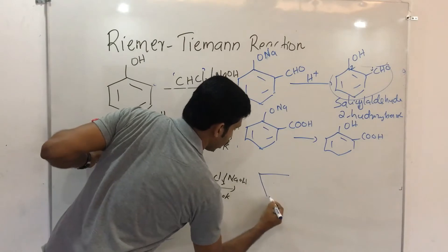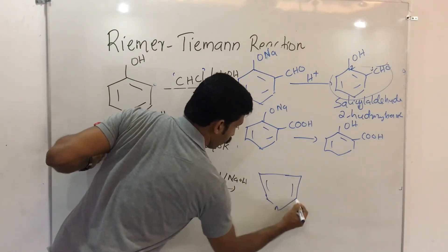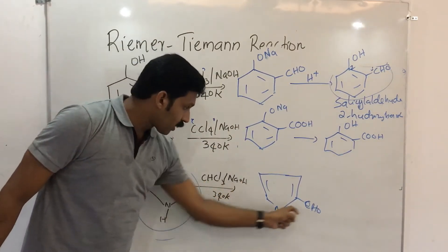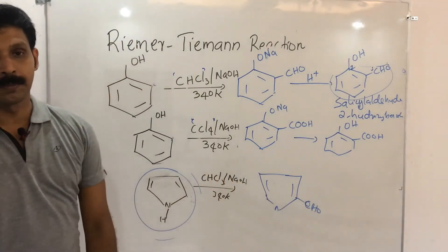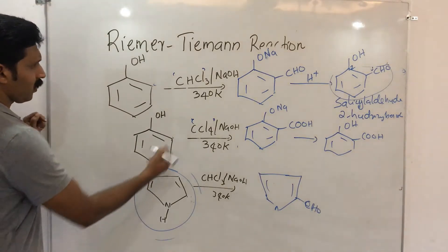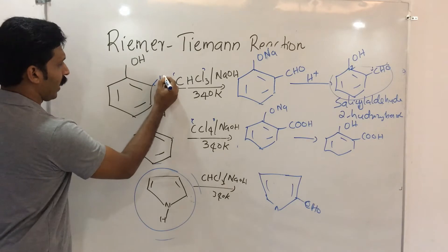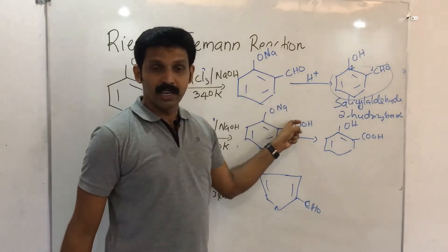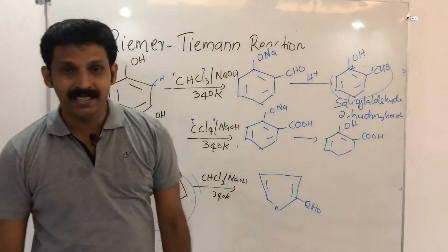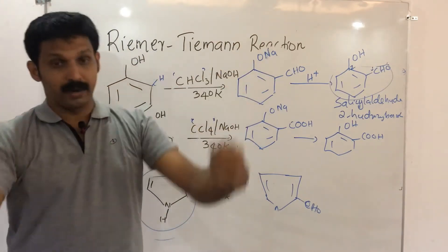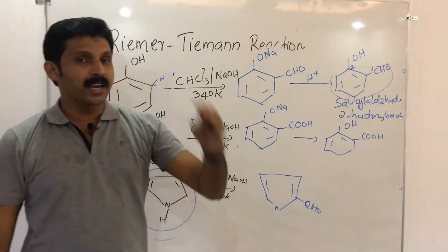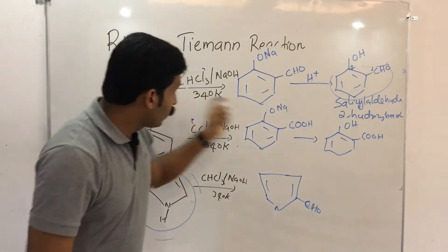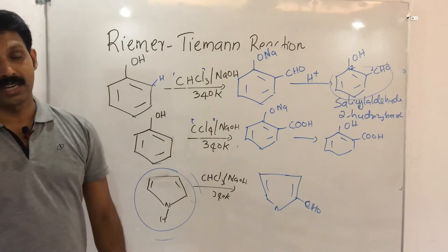When pyrrole reacts with chloroform and NaOH, you will get ortho-formyl pyrrole. In this case, one hydrogen on the pyrrole ring is replaced by a CHO group. This is the CHO group introduced into the ring. In this chemical reaction, one hydrogen is replaced by the CHO group.